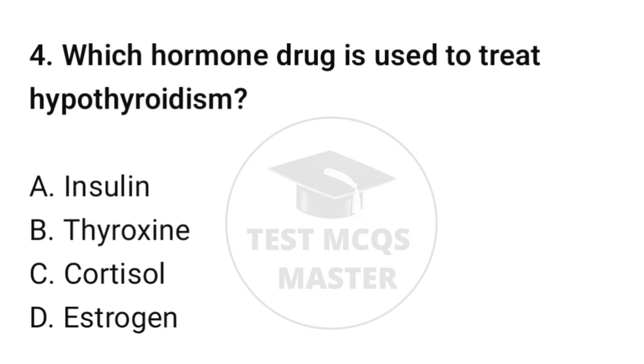Question number four: which hormone drug is used to treat hypothyroidism? The correct option is B: Thyroxine.